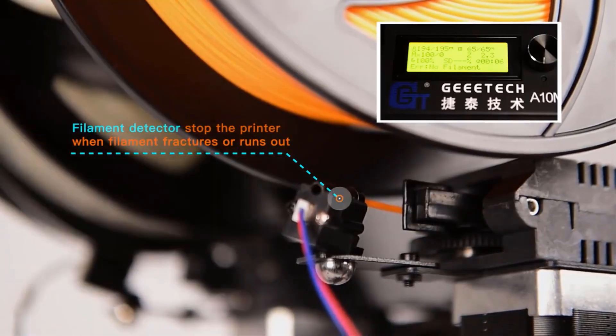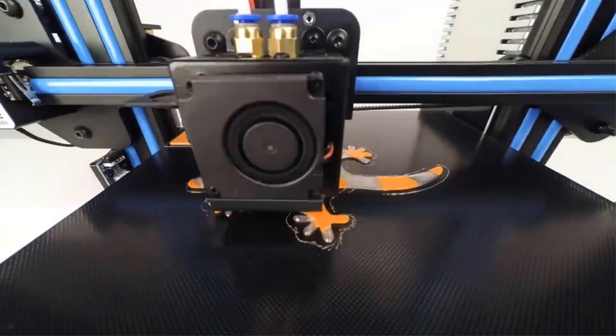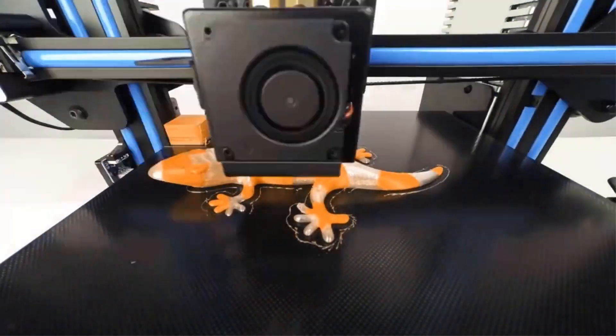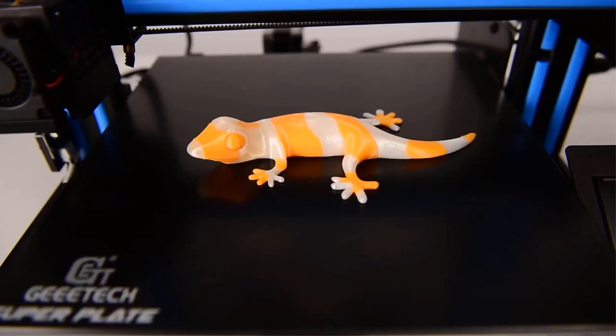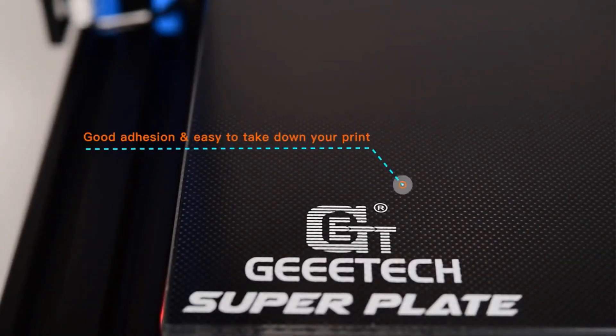The printing size depends on the model. For example, A10T features 22 by 22 by 26 cm, and A20M has a slightly larger printing volume of 25 by 25 by 25 cm.